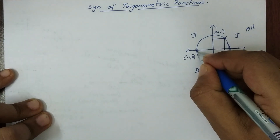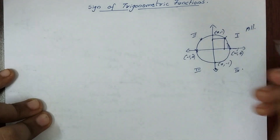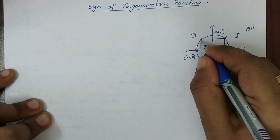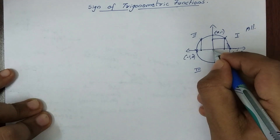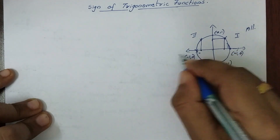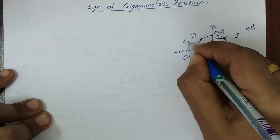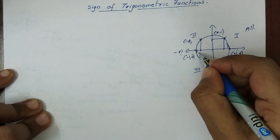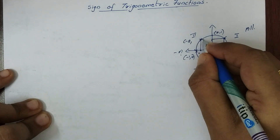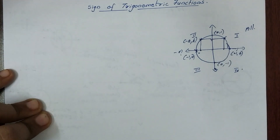Now, in the second quadrant, I can put this point. Since it becomes a minus value in x, here you have minus a. A general point is (a, b). Then x becomes minus a, and b is positive.